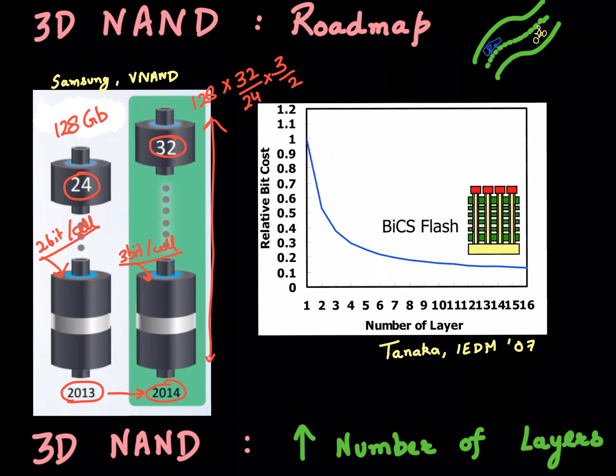You can see that this leads to doubling of the capacity—or doubling of the memory capacity that can be stored in each of these dies, even though with the same number of holes. This chip would have 256 gigabit of memory, so you have doubled the amount of memory by increasing the number of layers and the number of bits you can store per cell.